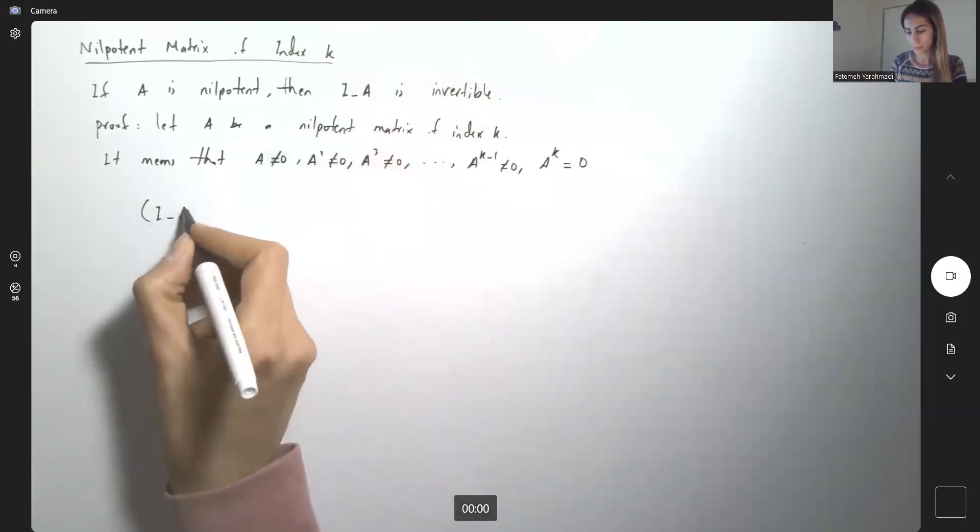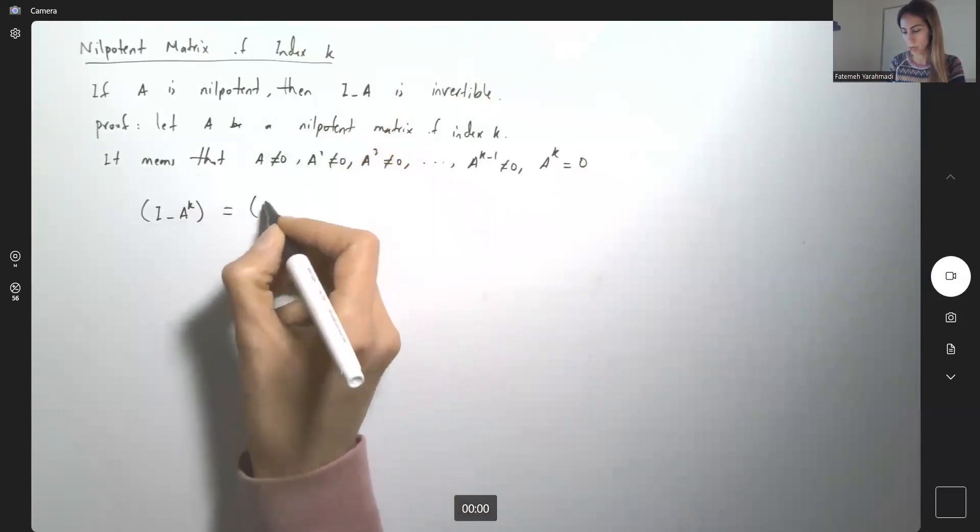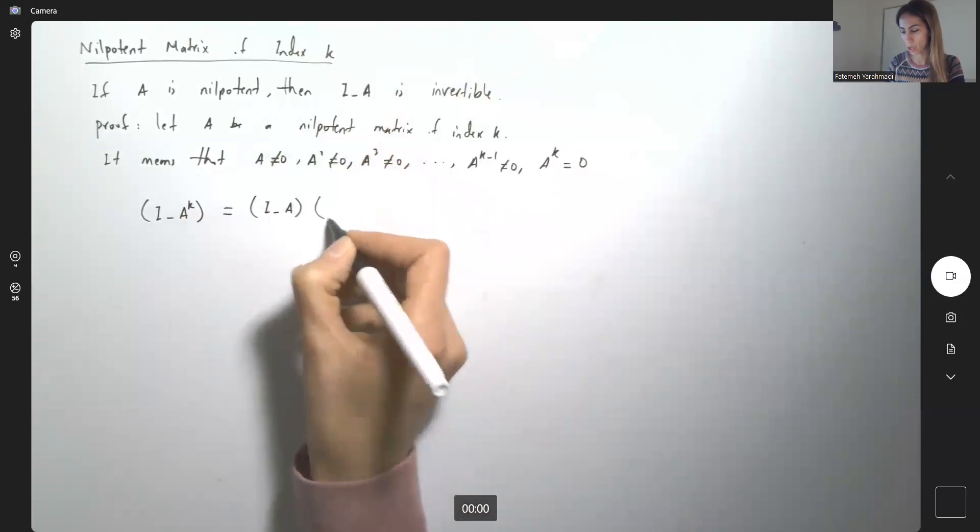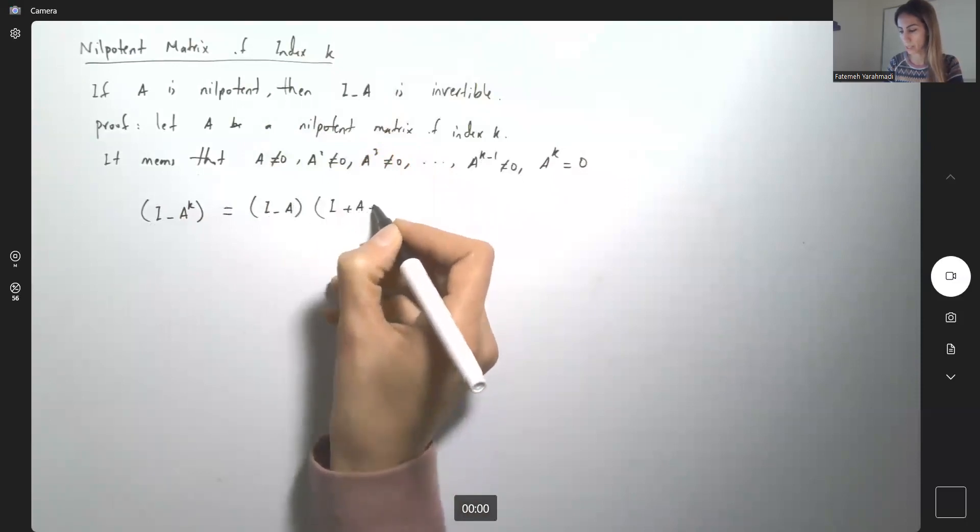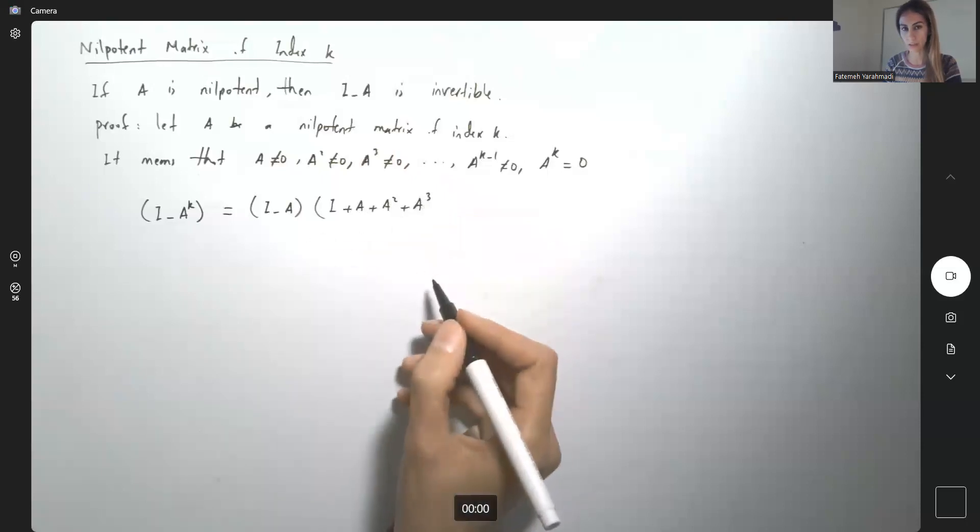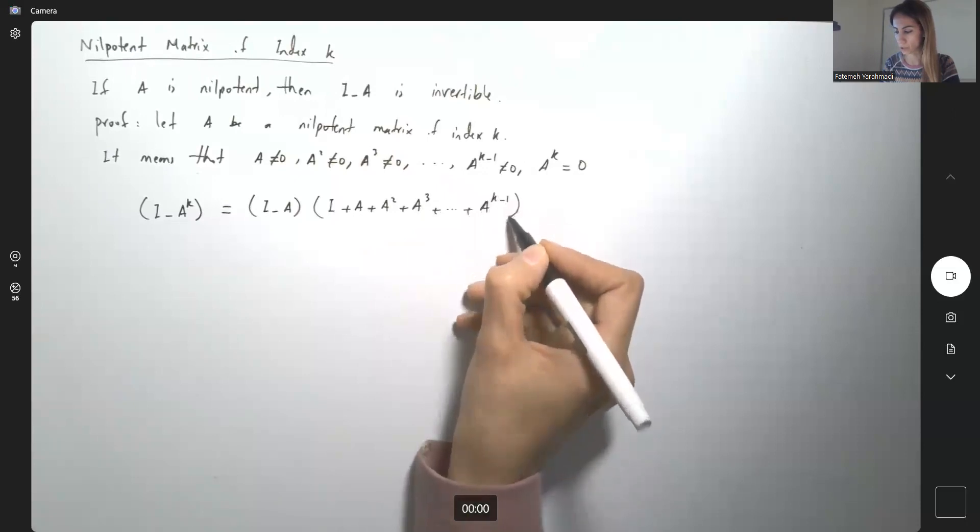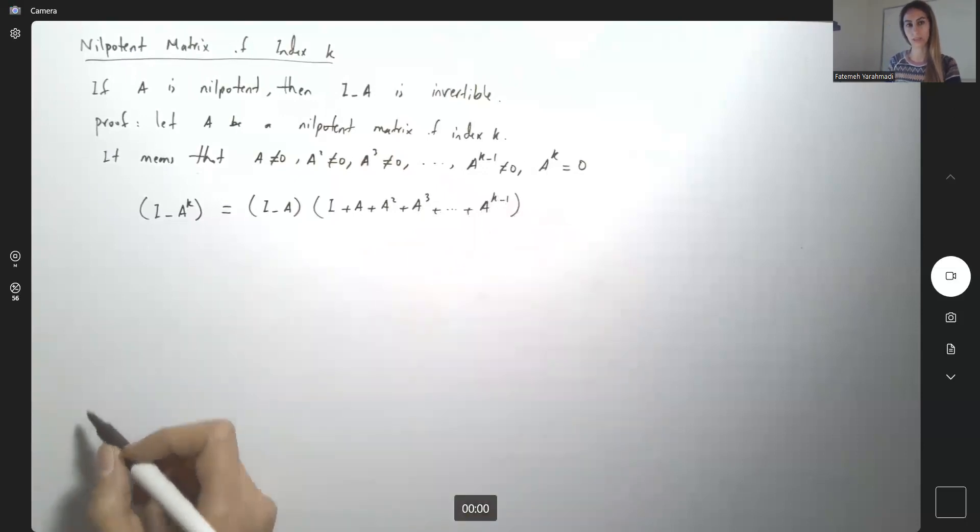But at the same time, I minus A to power K can be written as I minus A times I plus A plus A squared plus A to the third, just basic factorization, plus A to power K minus 1.